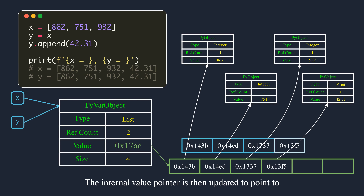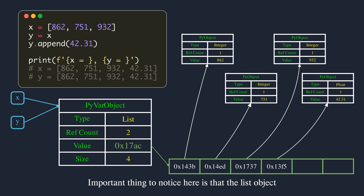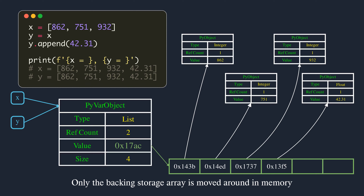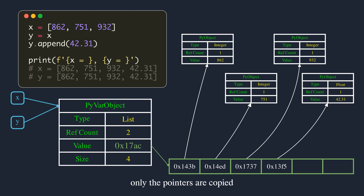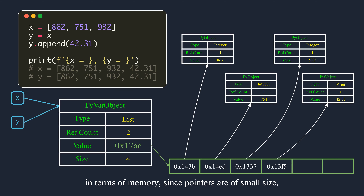When you keep adding elements and the array becomes full, Python allocates new memory — usually twice the size of the existing array — and moves items to the new array. The internal value pointer is then updated to point to the start of this new array and the old array's memory is released. Importantly, the list object address — the PyVarObject address — never changes; only the backing storage array moves. When copying to the new array, only the pointers are copied; actual objects never move. This makes such copy operations cheap in memory since pointers are small regardless of the size of the objects they point to.